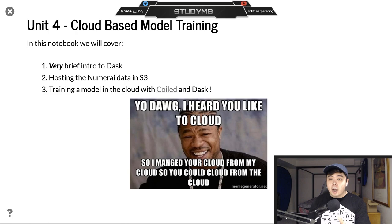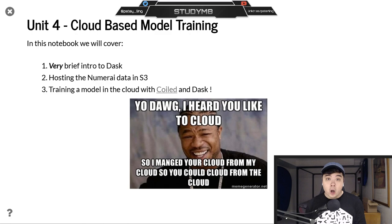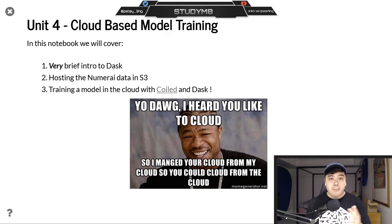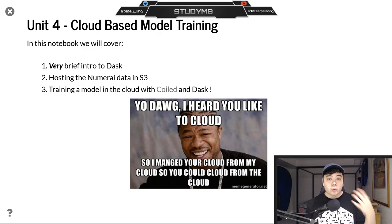We're going to start off with a quick introduction to Dask — we've mentioned it in our last videos and I'm not going to go crazy into it today, but I want to cover enough so that we understand what's going on in the code and why we're using Dask. Then we're going to host the Numeri Supermassive dataset that we installed via the Numeri CLI in an AWS S3 bucket so it can work with Dask properly, and lastly we're going to spin up a Dask cluster with Coiled and actually train our model in the cloud.